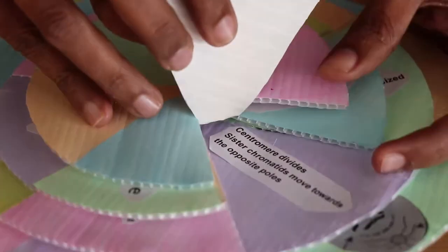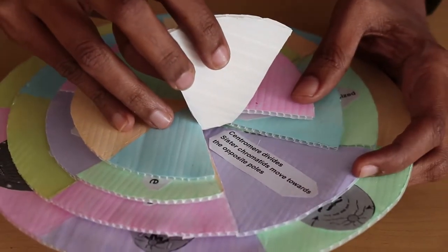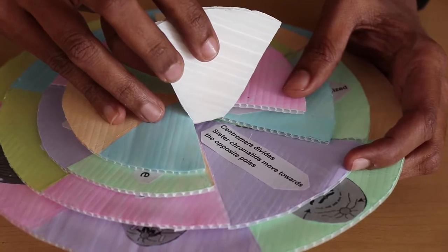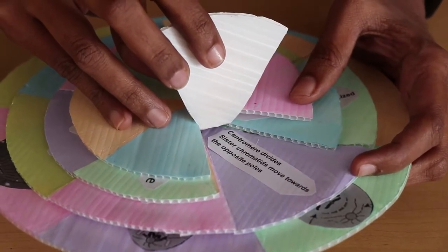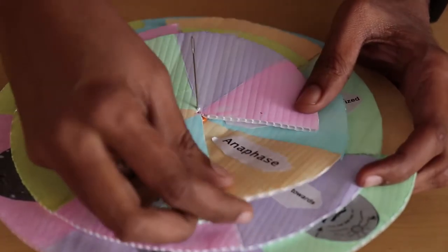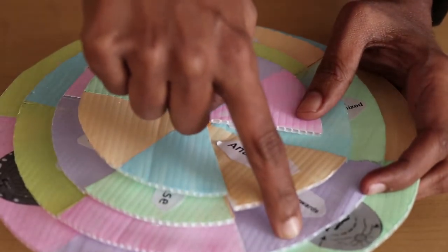Now this is the correct characteristic of anaphase: centromere divides, sister chromatids move towards the opposite poles. So now they have matched the name of the phase with the correct characteristic.